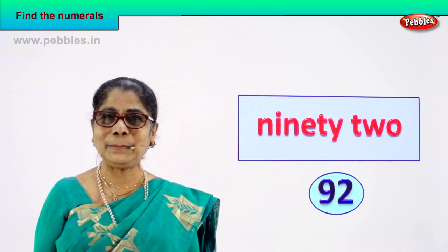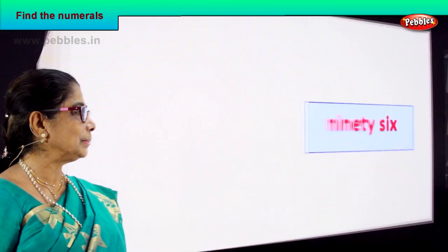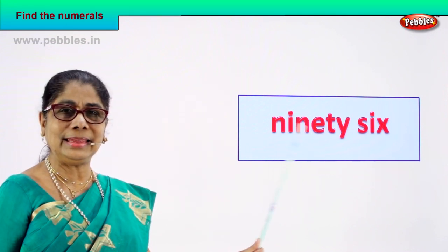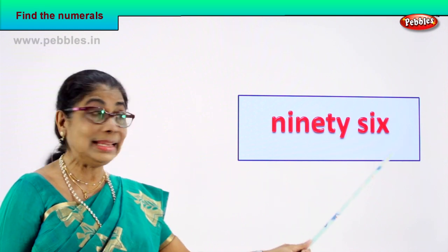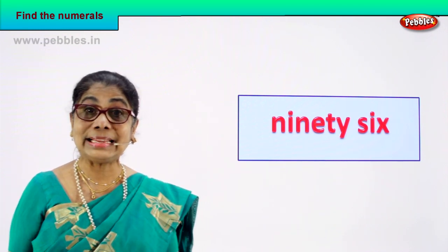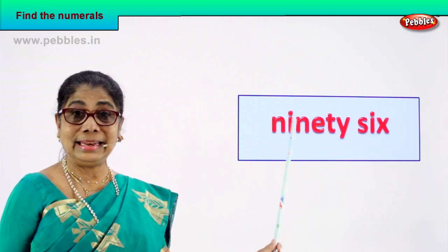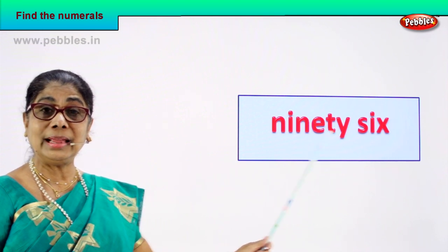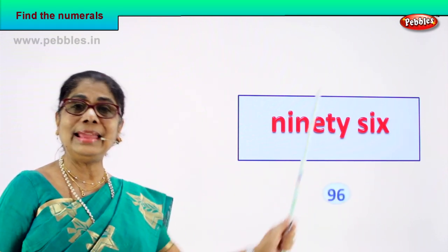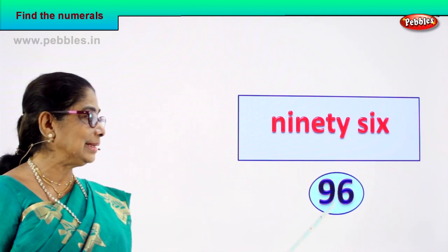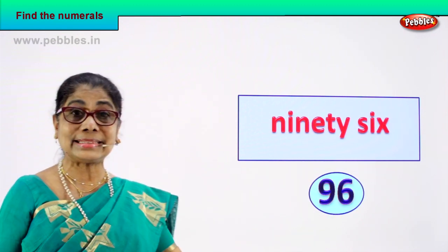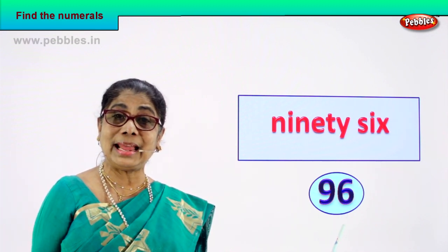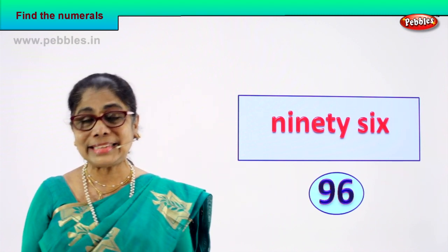Shall we take another number name? Look, read: N-I-N-E-T-Y, 90, S-I-X, 6 — 96. 96 is the name of a numeral. How will you write that numeral? 96 — you can write it as 9 and 6, 96. Good — 96 numeral and its name, 96.